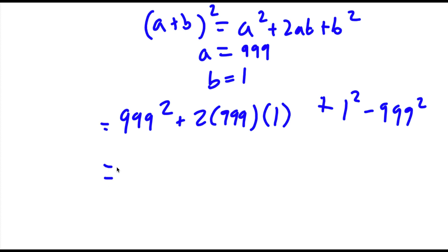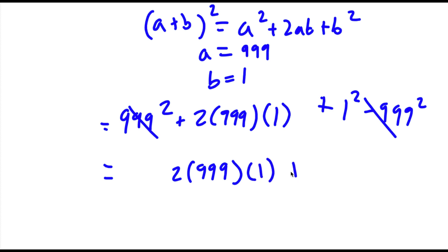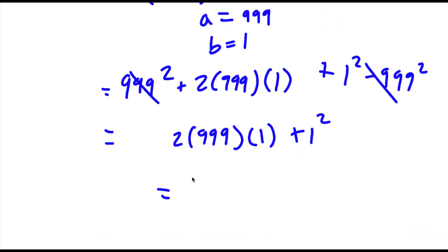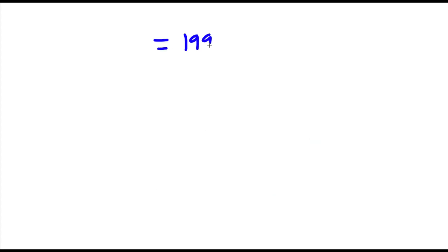Now the 999 squared terms cancel out. So I'll be left with 2 times 999 times 1 plus 1 squared. Now 2 times 999 is 1998, so I have 1998 plus 1, and this is equal to 1,999.